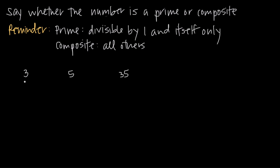If we look at this first example, 3 — we know that 1 will go into 3 because 3 divided by 1 is 3, and that goes in evenly. We also know that 3 is a factor of 3 because 3 goes into 3 evenly one time — 3 divided by 3 equals 1. So we know that 1 goes into 3 and 3 goes into 3, but there are no other numbers that go evenly into 3.